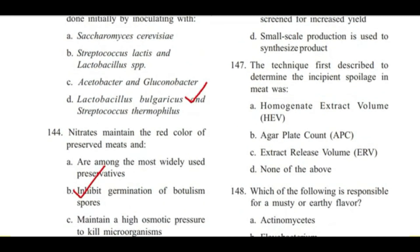Question 147: The technique first described to determine incipient spoilage in meat was — homogenic extract volume, agar plate count, extract-release volume, or none of the above? Answer is C, extract-release volume.